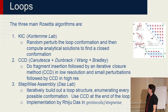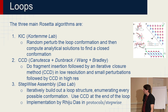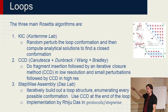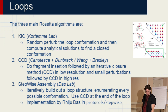We usually do CCD in low resolution, and then we do small perturbations followed by CCD in high resolution. And then there's stepwise assembly, which is the newest addition to our repertoire of loop algorithms, developed by Riju. This iteratively builds out a loop structure, enumerating every possible conformation, and at the very end uses CCD to close them up. It's a really good paper that just recently came out where he published and describes it.